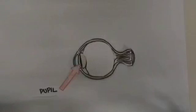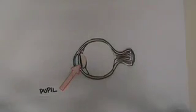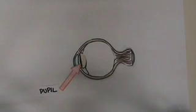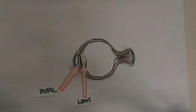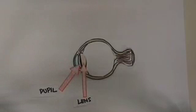Let's first start with vision. In the eye, light passes through a small adjustable opening known as the pupil. Behind the pupil is the lens, the transparent structure that changes shape to help focus images on the retina.